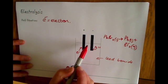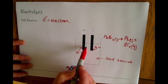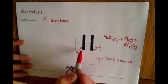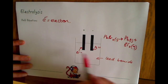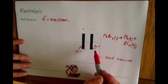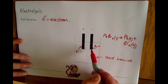And they're basically focusing on what's happening at each electrode. So we're talking about bromide ions here giving away electrons and becoming bromine, so we can write a half equation for that. And we're talking about lead ions gaining electrons and turning into lead atoms, and we can write an equation for that.